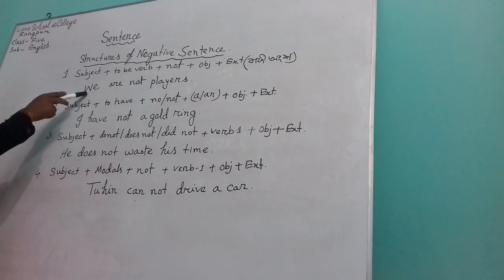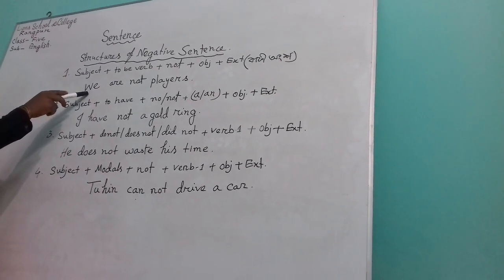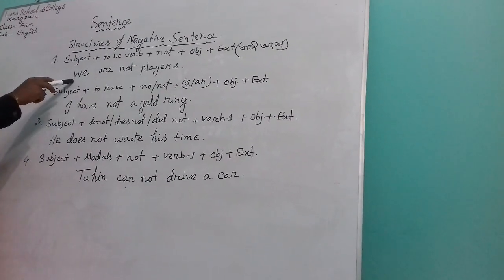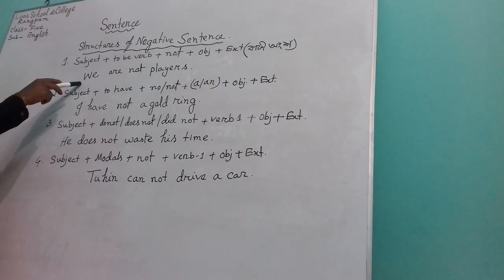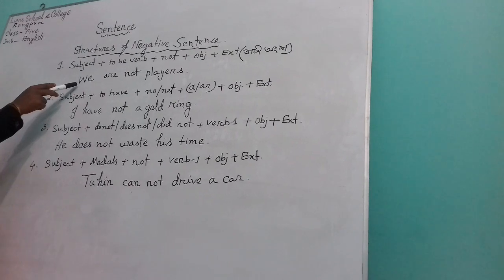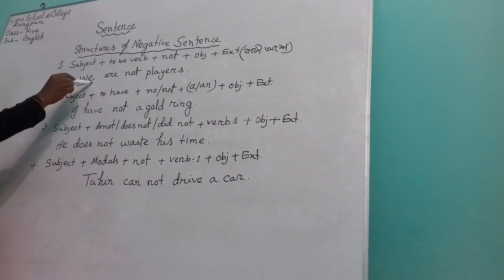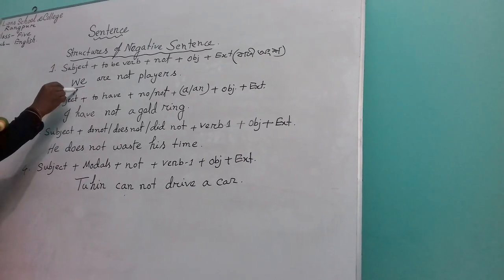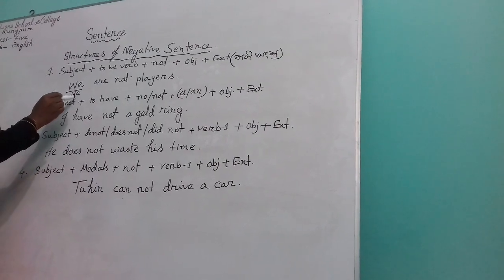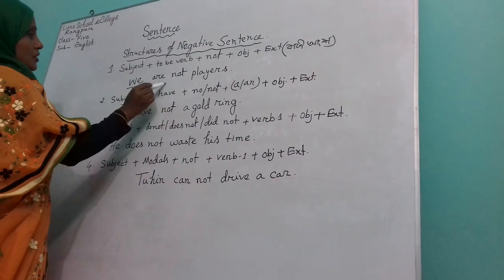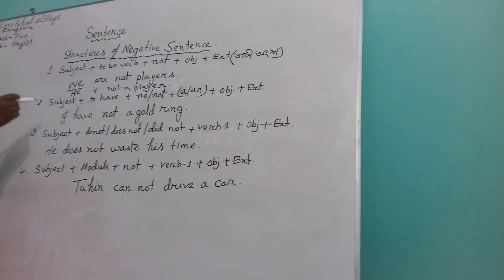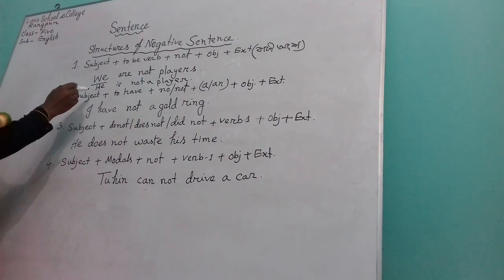See one example: 'We are not players.' Here 'we' is the subject, 'are' is the BE verb, 'not' comes next, then the object. In this way, you try to write another negative sentence. If I change the subject and use 'he', I can write: 'He is not a player.' Dear learners, you try to write more sentences of this structure.